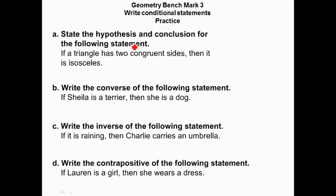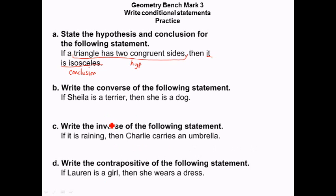A triangle is isosceles if it has two congruent sides. I could rearrange that sentence — the if part, the two congruent sides, will still be the hypothesis. The part that comes after 'if' is always the hypothesis, even if it's the second part of the sentence. 'Having two congruent sides' is the hypothesis; 'it is isosceles' is the conclusion. Try to write the converse, the inverse, and the contrapositive. Converse is a flip; inverse is a negate; contrapositive is both.